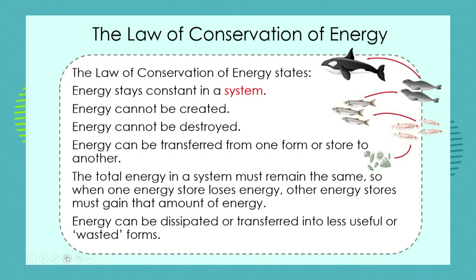We're talking about the law of conservation of energy, which means that in a particular system the energy stays constant. We simply transfer the energy from object to object, or from store to store — from potential energy store to kinetic energy store — even within one of the objects in the system. The total energy in the system must remain the same, so if one store loses energy, other stores must gain it.